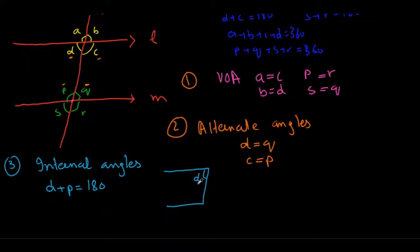That's why they are called internal angles and they add up to 180 degrees. I'm going to delete this picture quickly. All right. OK, so another pair is C and Q. So C and Q as a pair of internal angles, and they add up to 180 degrees.